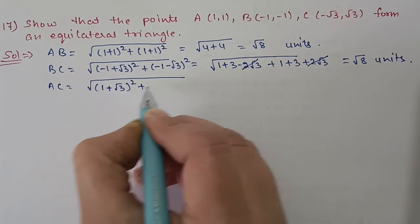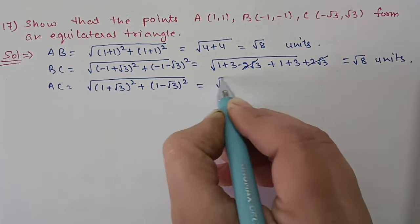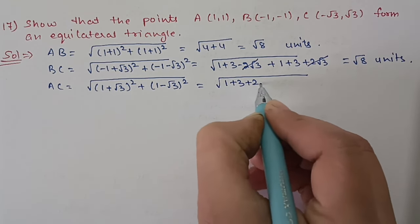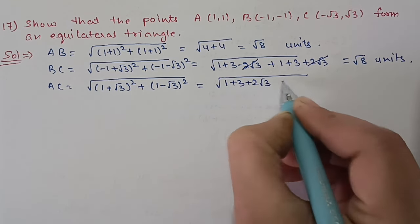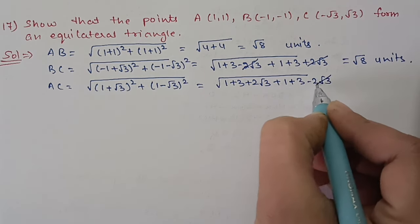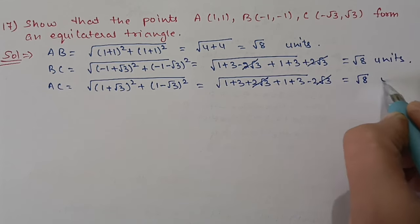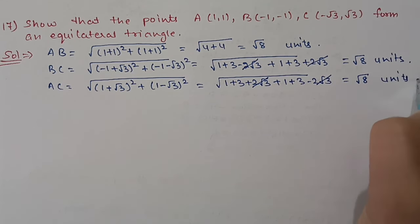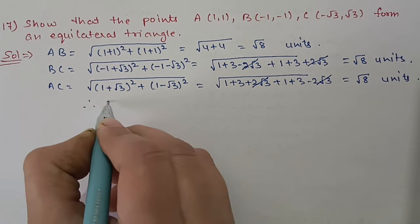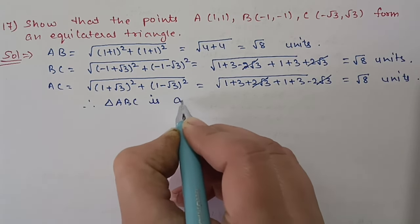Third side AC = √((1−(−√3))² + (1−√3)²). Applying the formula: (1+3+2√3) + (1+3−2√3), the 2√3 terms cancel again, giving √8 units. Since all three sides are equal, therefore triangle ABC is an equilateral triangle.